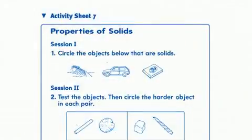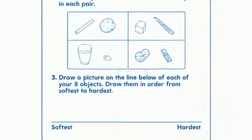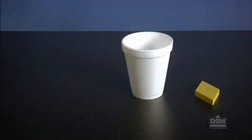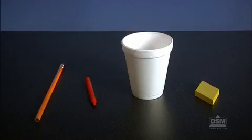To prepare for Session 1, make a copy of Activity Sheet 7 for each student. Each team of two will need a block and a foam cup. You will also need a crayon and a pencil for class demonstration.